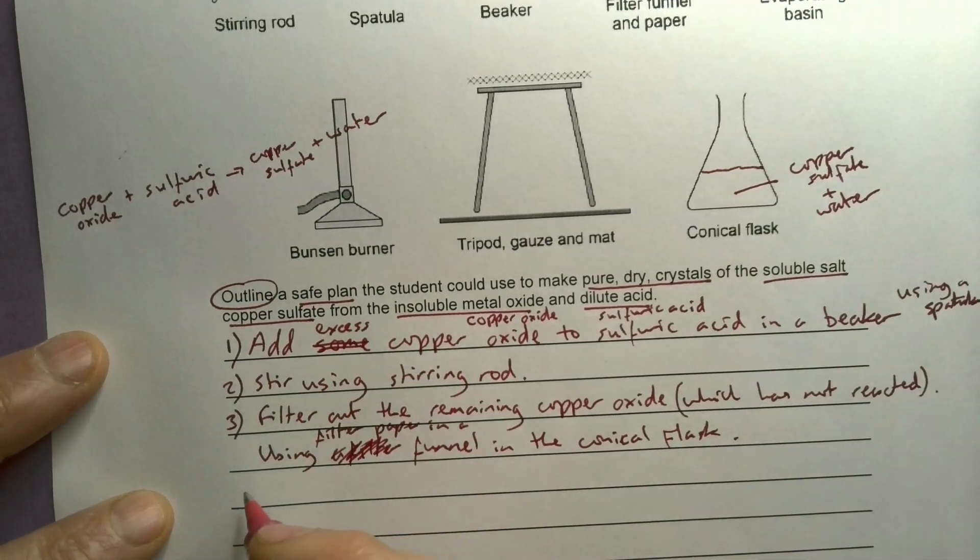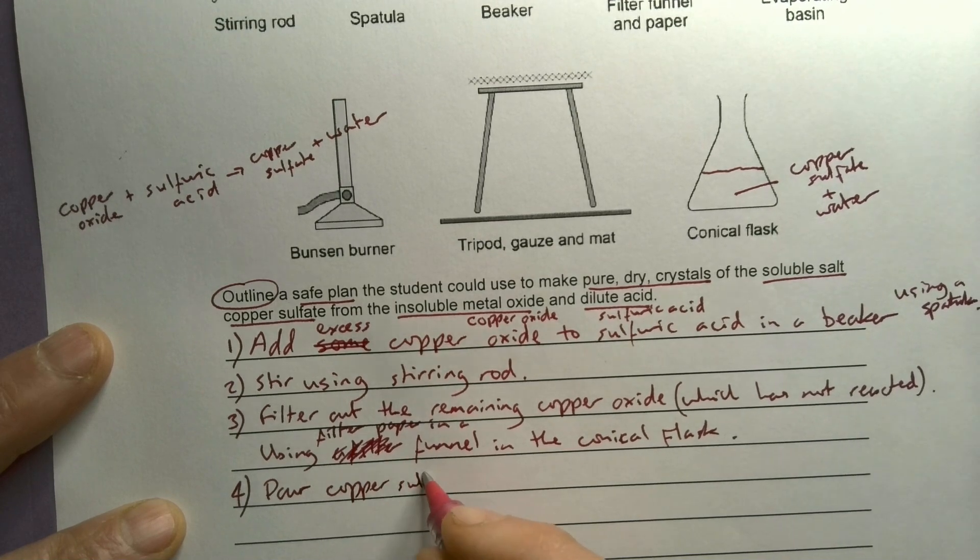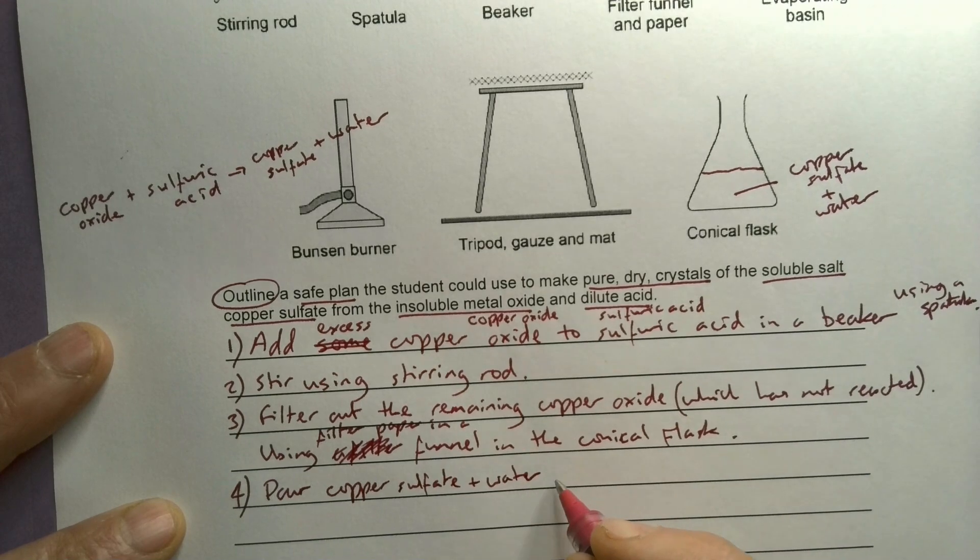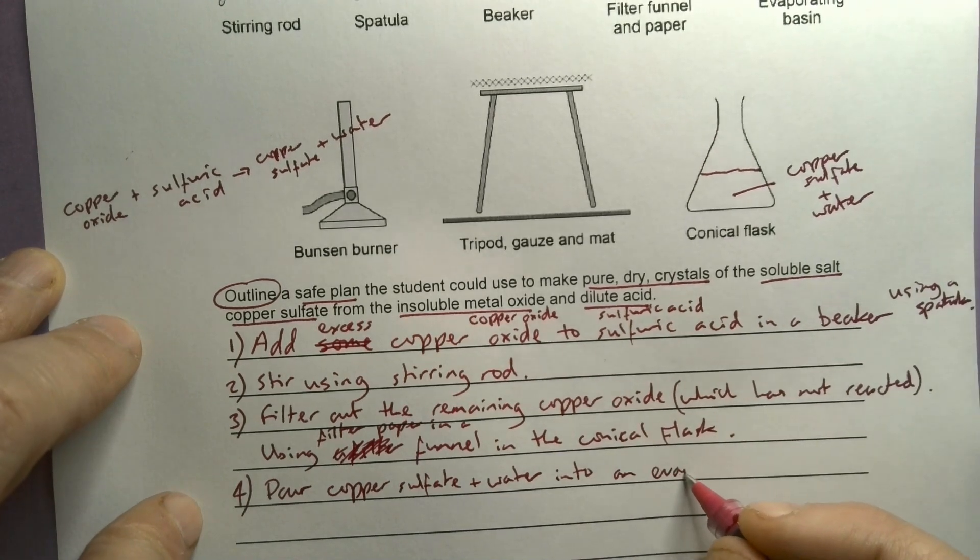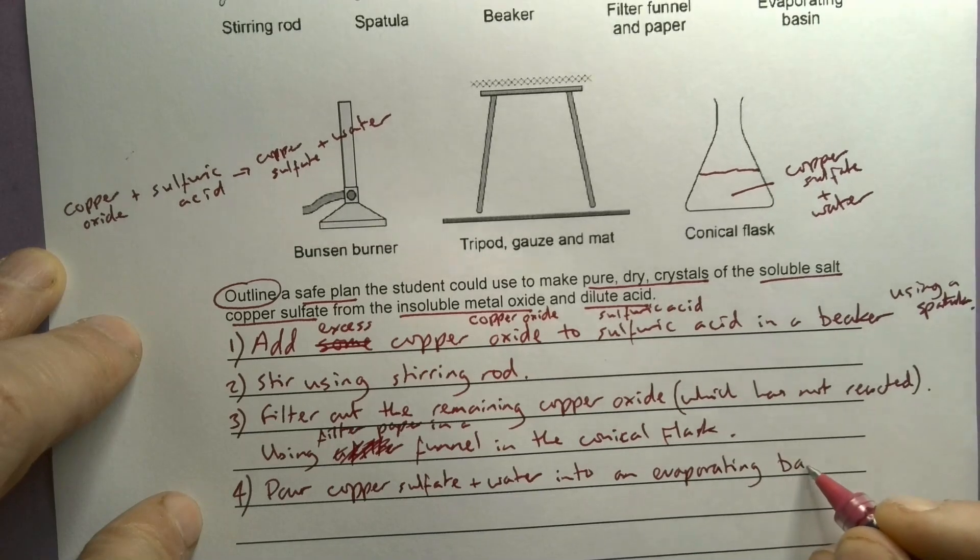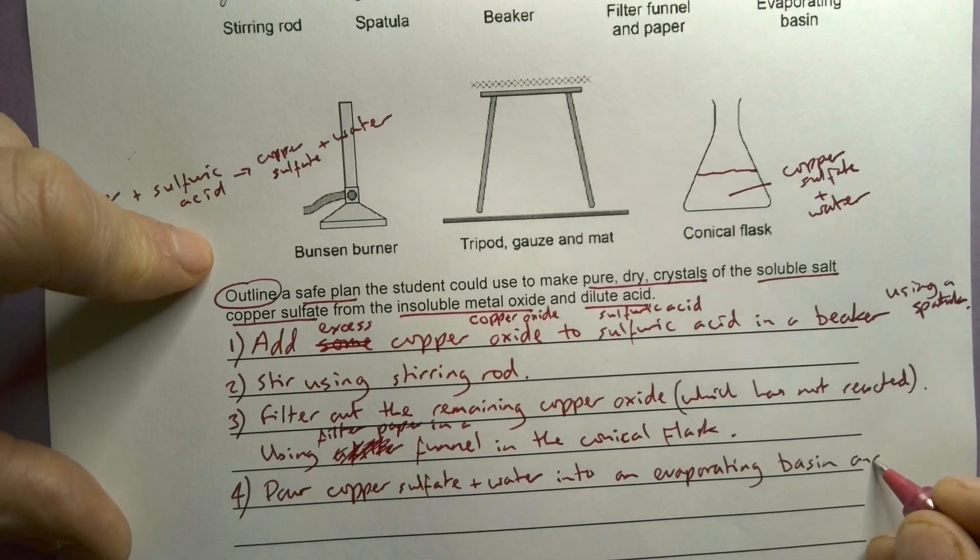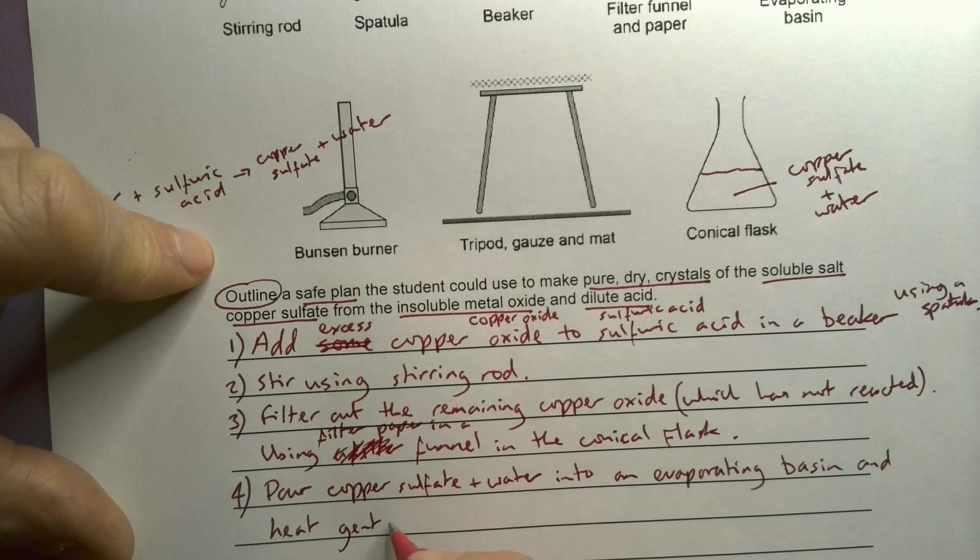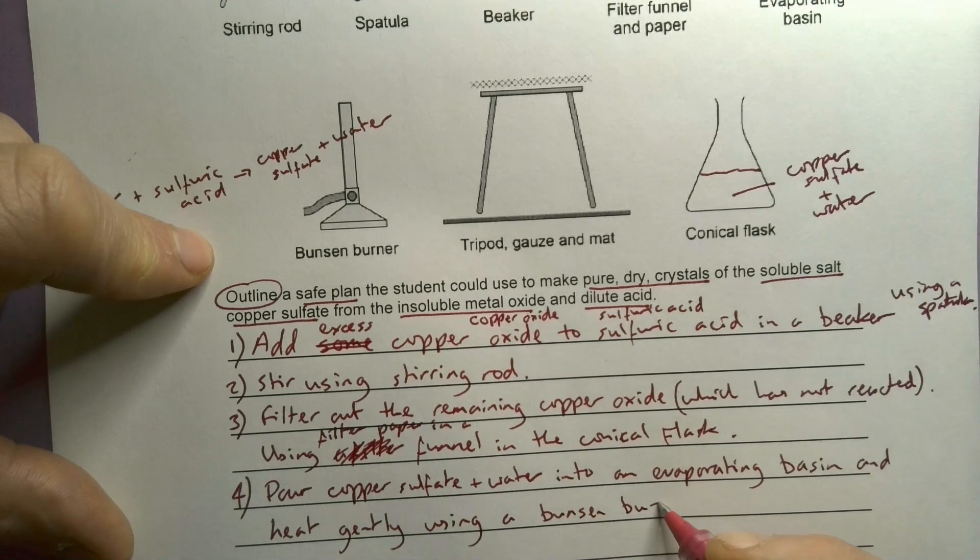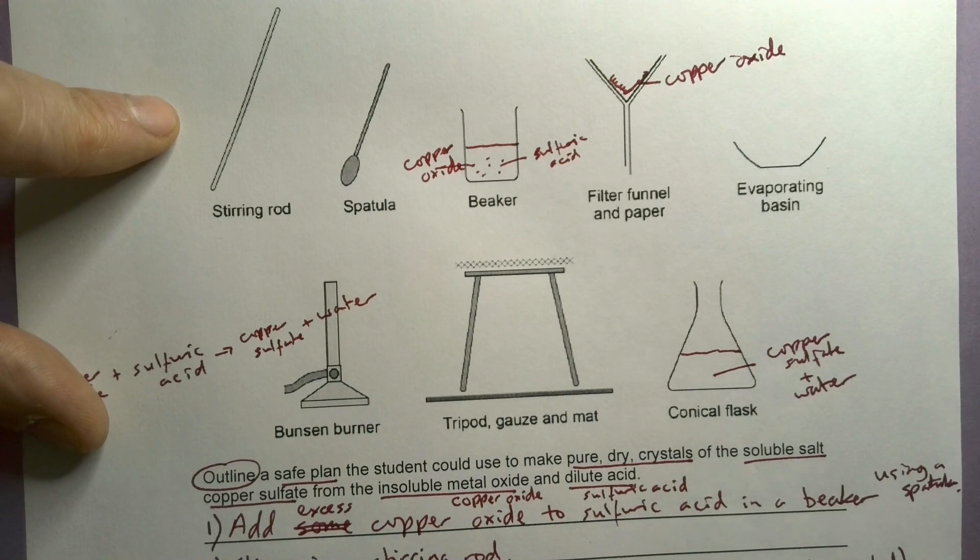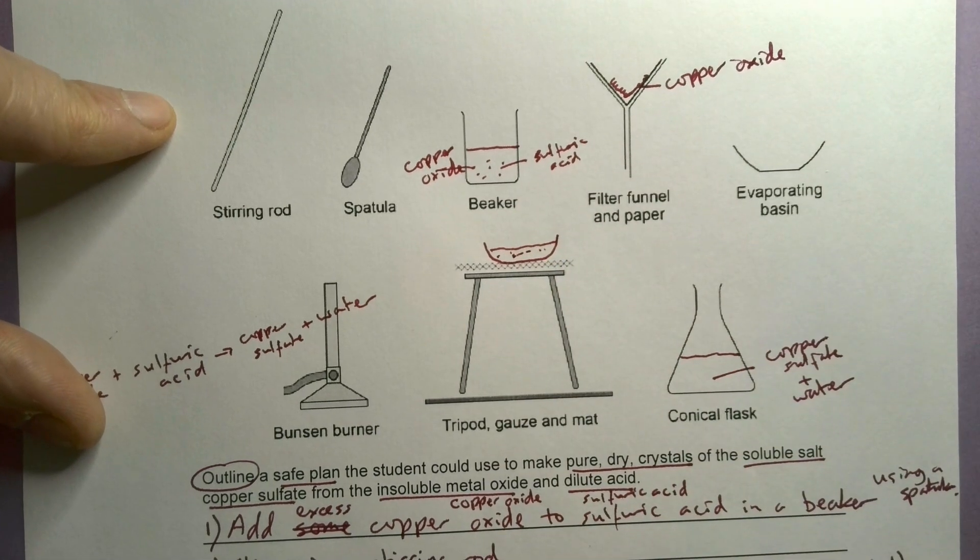So now I've got copper sulphate and water. So pour the copper sulphate plus water into an evaporating basin and I'm going to heat gently, heat gently using a Bunsen burner. Okay, so I end up with that.